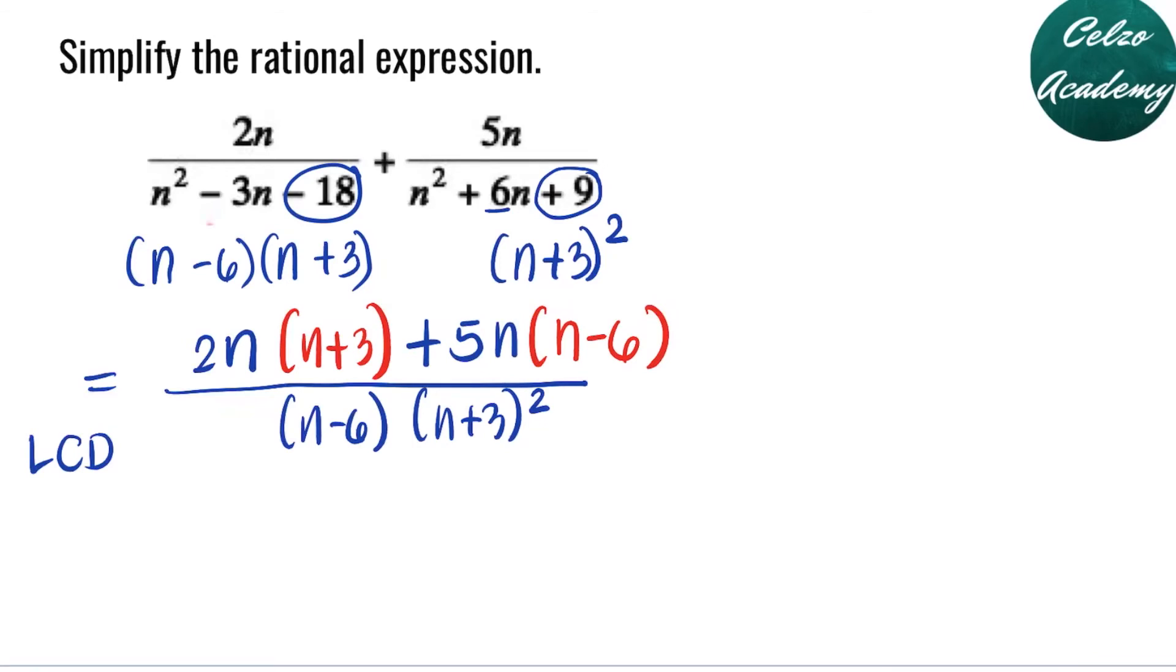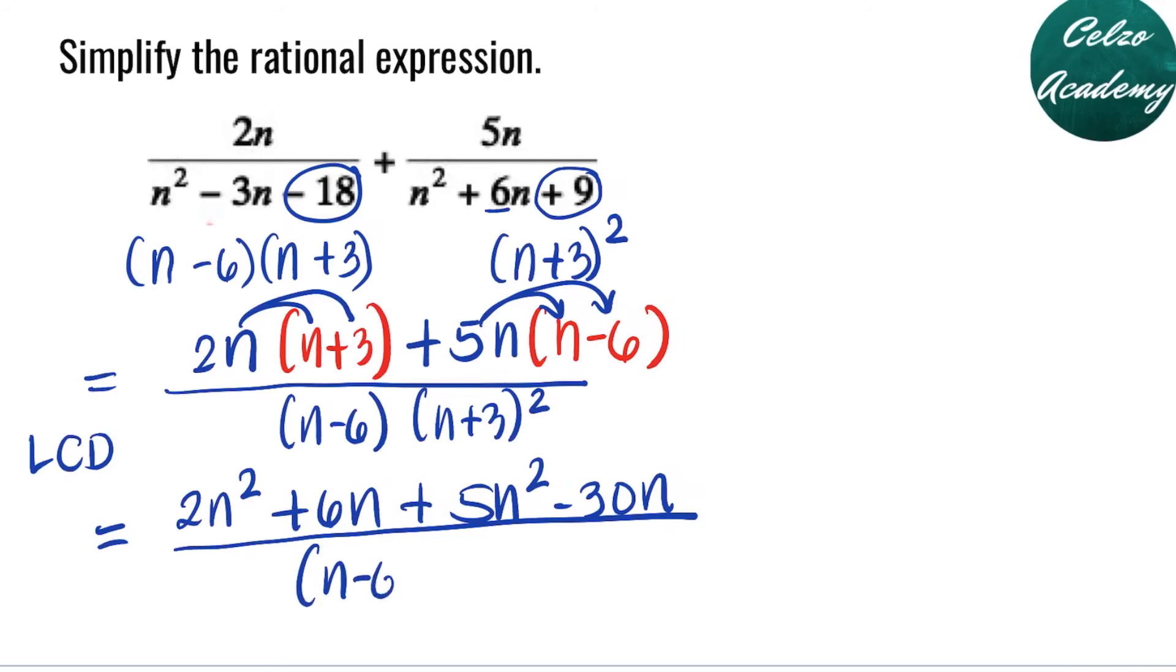Now, we need to simplify the numerator by using distributive property. 2n times n is 2n squared. 2n times 3, 6n plus 5n times n, we have 5n squared. 5n times negative 6, we have negative 30n. Divided by our denominator, n minus 6 and n plus 3 to the second power.